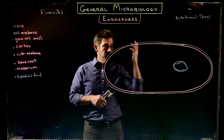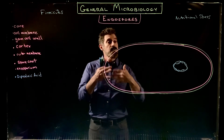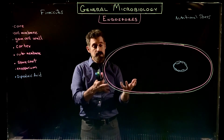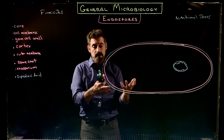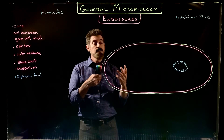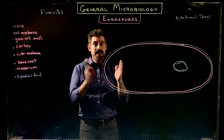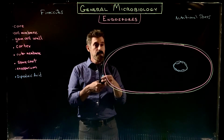The first thing that happens is there's stress. The stress triggers gene expression within the cell, and that also triggers an asymmetrical cell division.